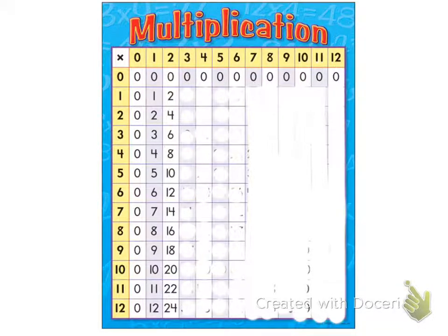So what's the third multiple of four? Well, the third multiple of four — sorry, I have two — three times two is six.